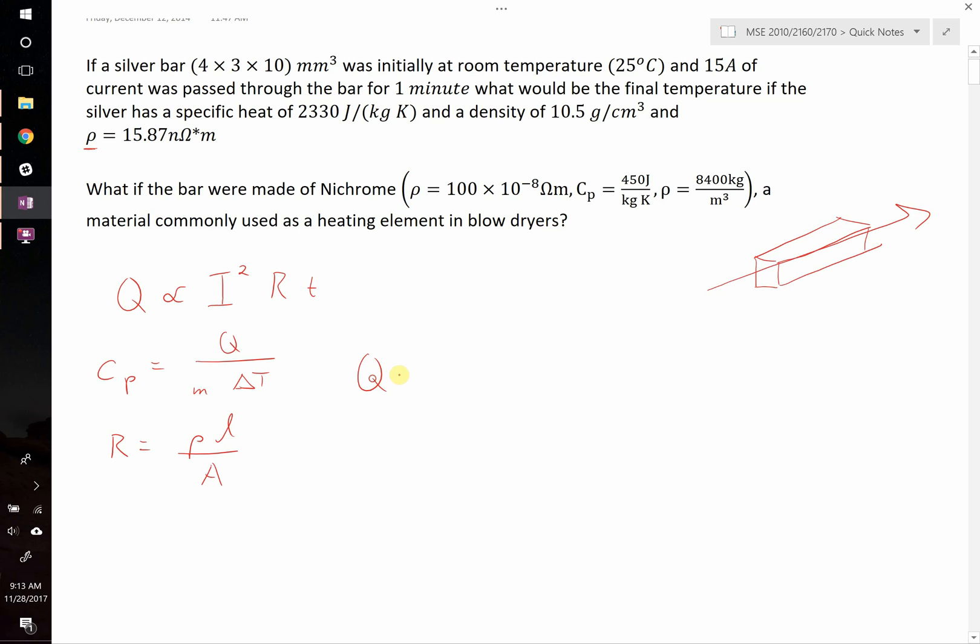We know that Q is going to be equal to 15 amps squared times our resistance, which is going to be 15.87 times 10 to the negative 9 ohm meters, multiplied by the length, 0.01 meters.